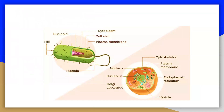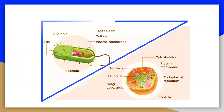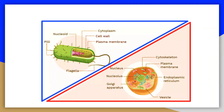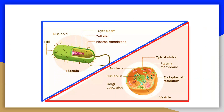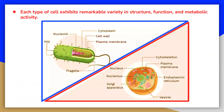The two main types of cells are prokaryotic cells, which do not have a nucleus, and eukaryotic cells, which contain a well-organized membrane-bound nucleus. Each type of cell exhibits a remarkable variety of structure, function, and metabolic activity.